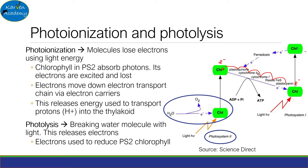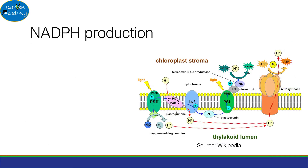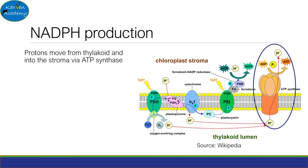Hopefully this made sense. Do take time to understand this, as it is complex. Once the protons have been pumped into the thylakoid membrane by photoionization, they move via ATP synthase into the stroma. As they do, ATP is made from ADP and inorganic phosphate.